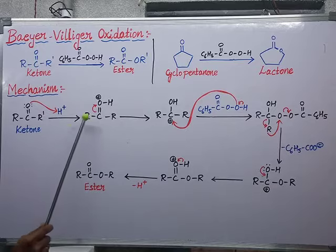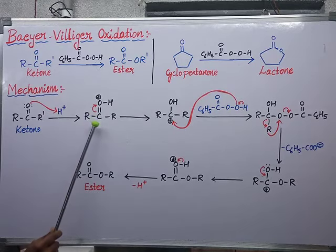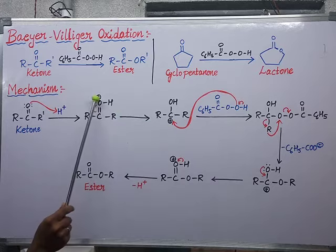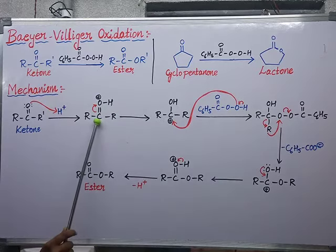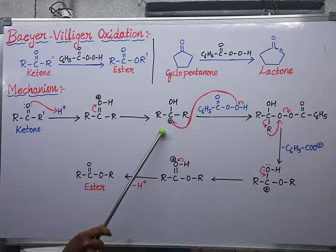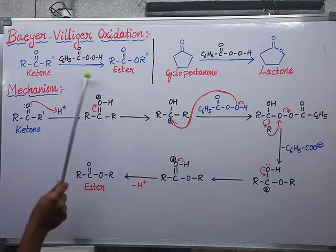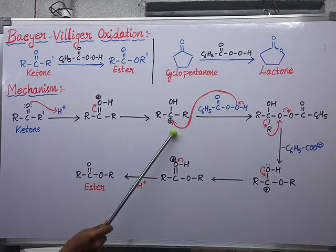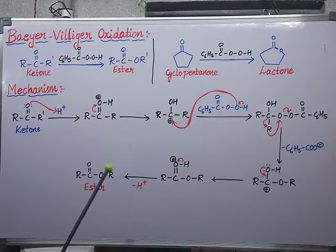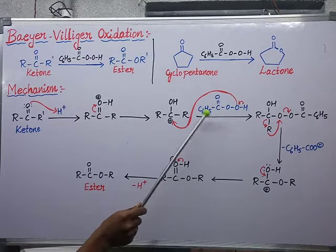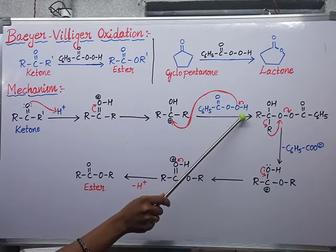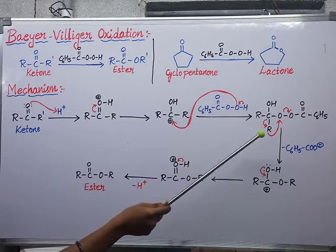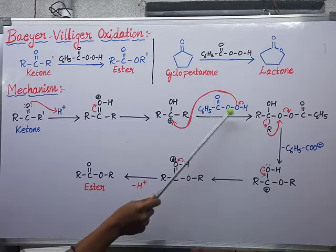So next, this positive charge on oxygen is nullified and this carbon gets the positive charge. In the next step I am adding the peroxybenzoic acid to the carbocation. Peroxybenzoic acid can break into H⁺ and the peroxybenzoate anion.